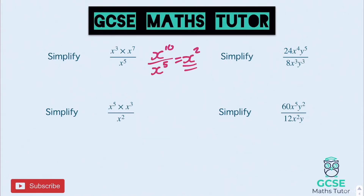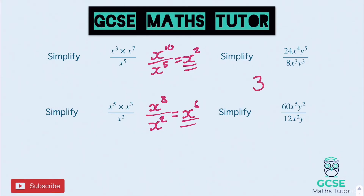On to the one below: tidying up the top gives x to the power of 8, divided by x to the power of 2. Subtracting the powers — 8 take away 2 — gives x to the power of 6. Moving on to the one with numbers: 28 divided by 8 gives 3. We have x to the power of 4 divided by x to the power of 3 — subtracting gives x to the power of 1, so just x. Then y to the 5 divided by y to the 3 — 5 take away 3 is 2 — giving y to the power of 2.